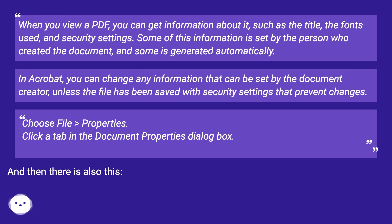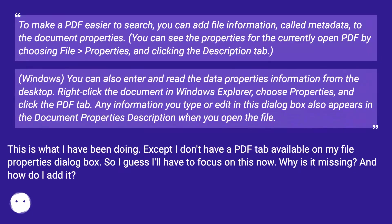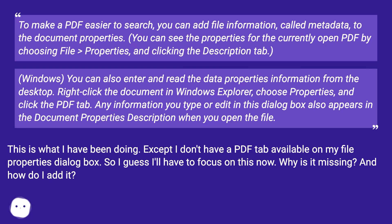Choose File > Properties, then click a tab in the Document Properties dialog box. To make a PDF easier to search, you can add file information called Metadata to the Document Properties. You can also enter and read the data properties information from the desktop — right-click the document in Windows Explorer, choose Properties, and click the PDF tab. Any information you type or edit in this dialog box also appears in the Document Properties description when you open the file.